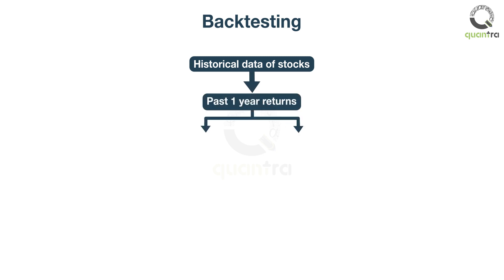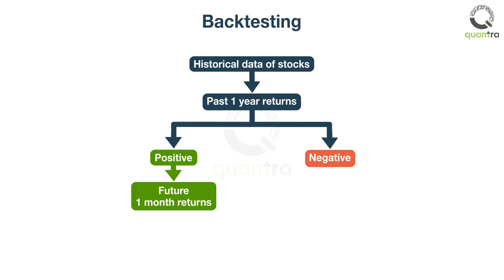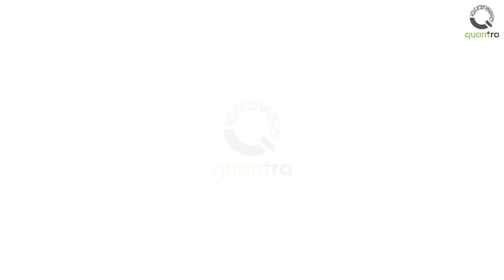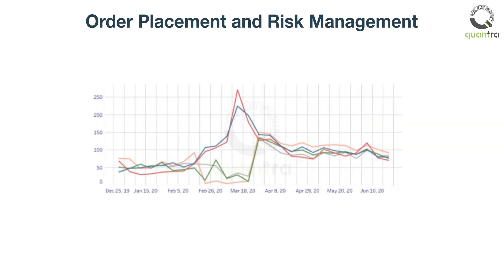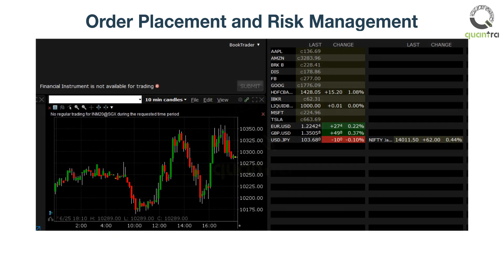You check whether the returns are positive or negative. If positive, then you check for the future one month returns of the stocks. You analyze the performance of the strategy, and if everything works well, then place the orders to a broker. This is a simple example of a quant trading strategy.